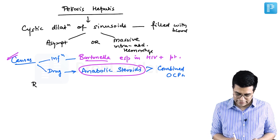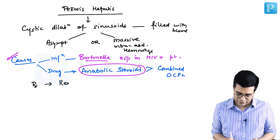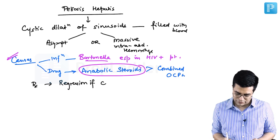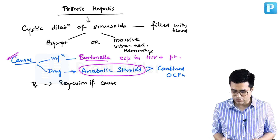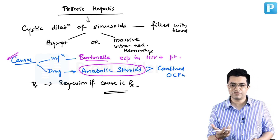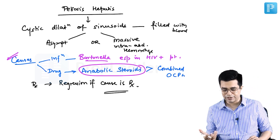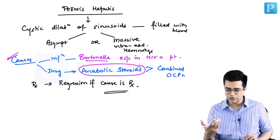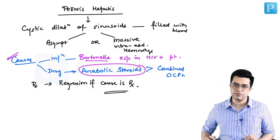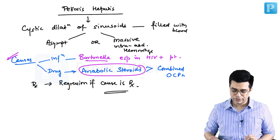Treatment-wise, peliosis hepatis tends to show regression if the underlying cause is treated. Treating the cause is the ultimate management, along with supportive therapy. In cases of intra-abdominal hemorrhage, supportive management of the patient is required.